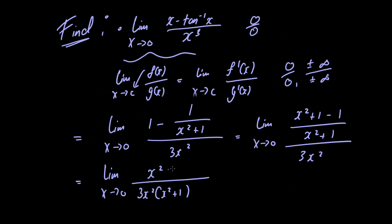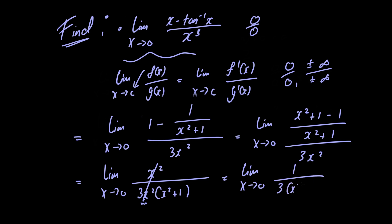Now notice in the numerator we have a factor of x squared, and we also have a factor of x squared in the denominator, so we can cancel those two. We're left with the limit as x approaches 0 of 1 over 3 multiplied by x squared plus 1.